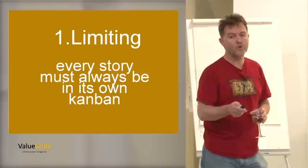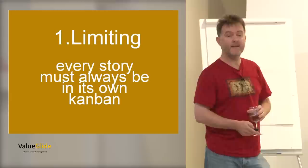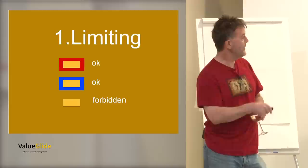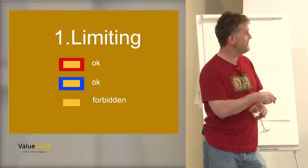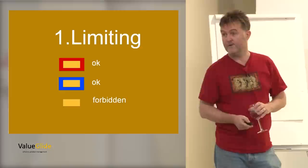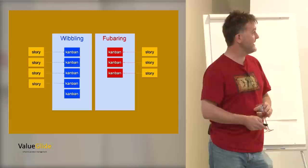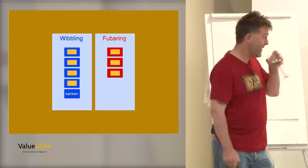Now we have to introduce a rule. We only actually need two rules. The first rule is limiting. Every story must always be in its own Kanban. Otherwise it doesn't work. So if we visualize that, we can see that this story is in a red Kanban from the red team. This story is in a blue Kanban from the blue team. But this one isn't in a Kanban. So that story is forbidden. You're not allowed to have that on the diagram. And so what we simply do is put the stories back into the Kanbans like that. And that's it. Everything follows from that.